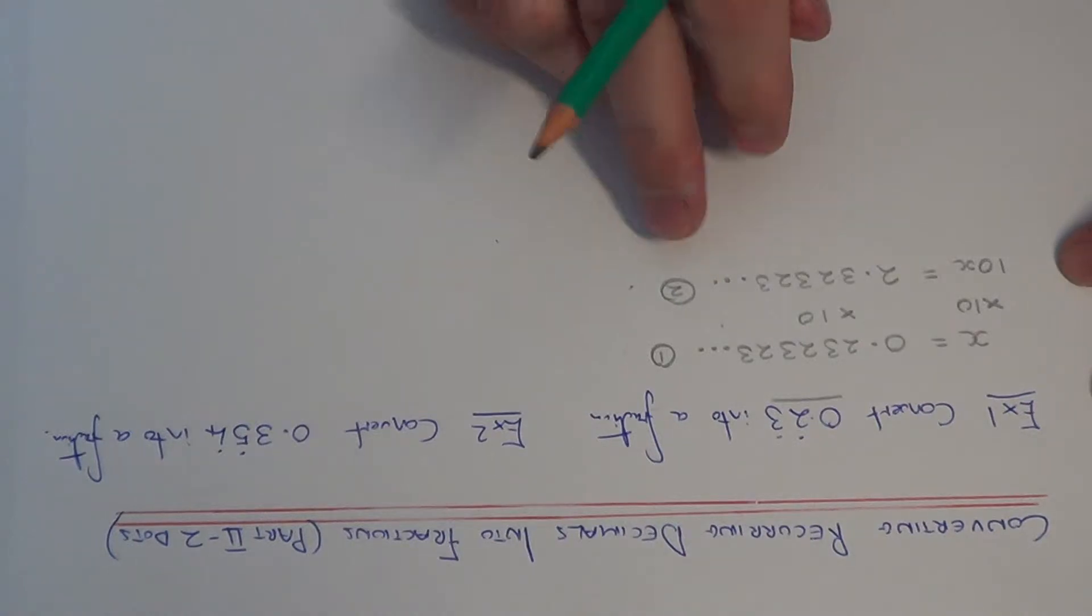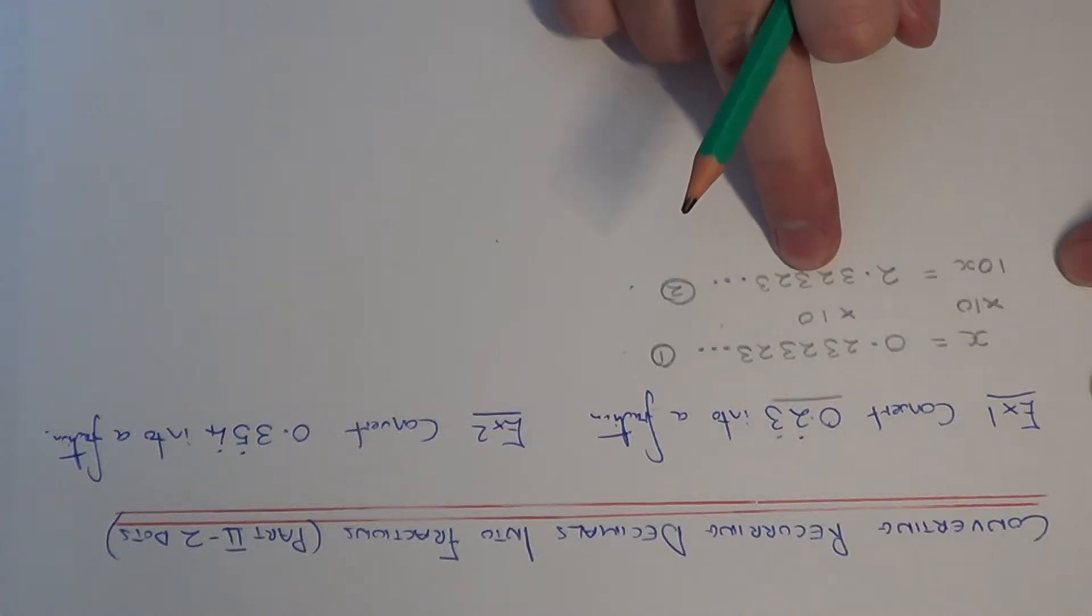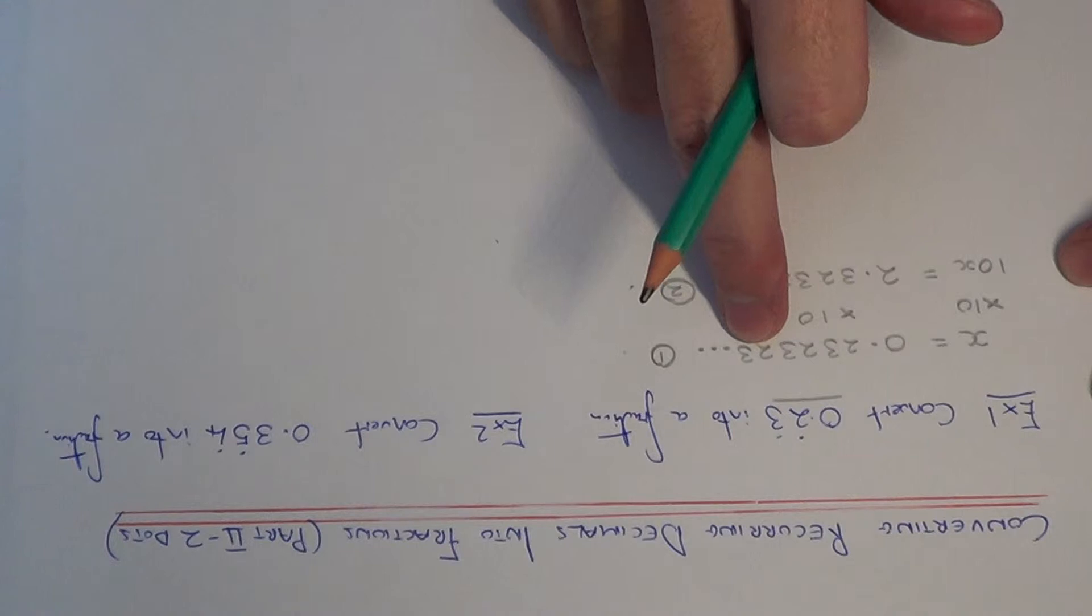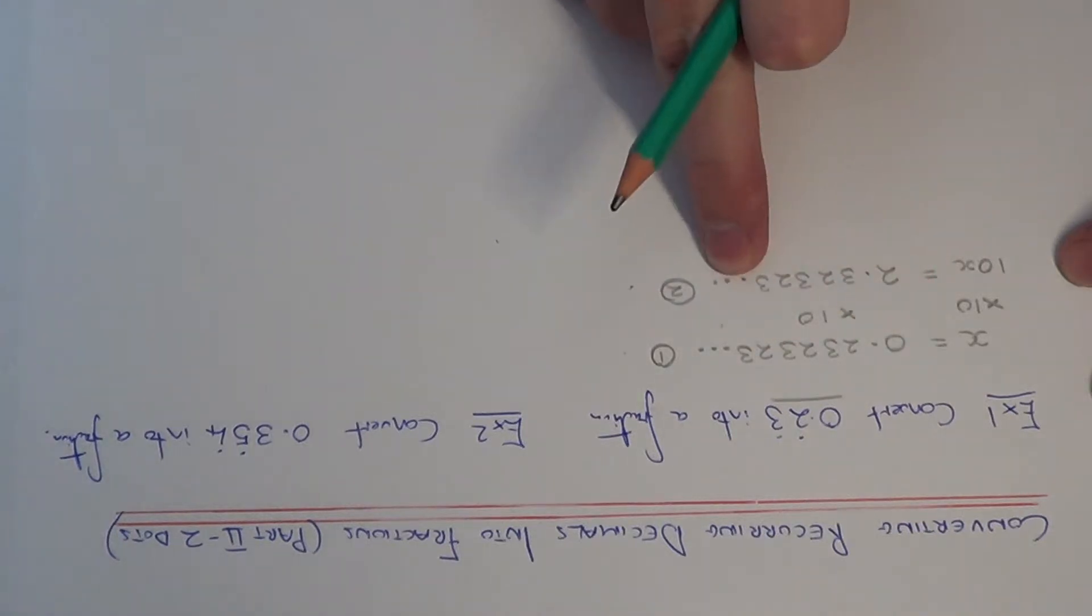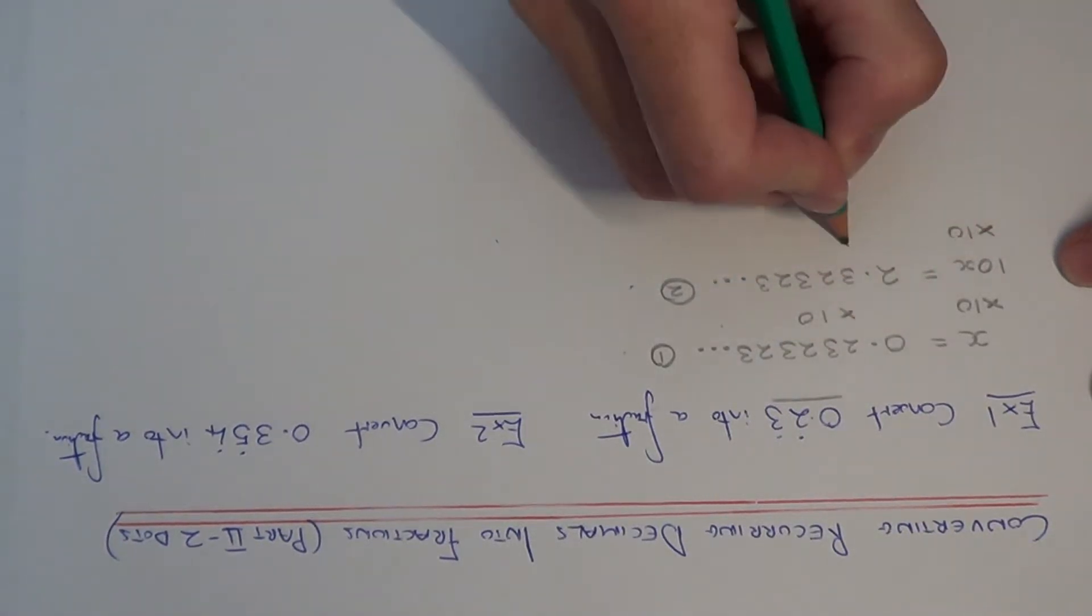Now I cannot subtract these two equations just yet to get rid of the decimals. So I need to keep multiplying by 10 until the numbers after the decimal point match. So I am going to multiply by 10 again.